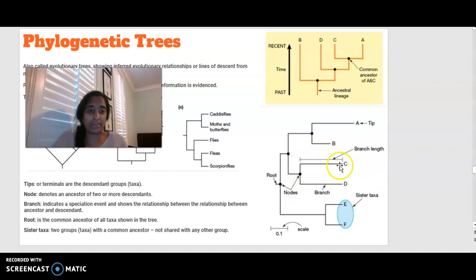And the branch length is also very important here. The root, right at the start is the common ancestor of everything that is shown in this evolutionary tree or this phylogenetic tree. So the root is a common ancestor for everything that is shown.